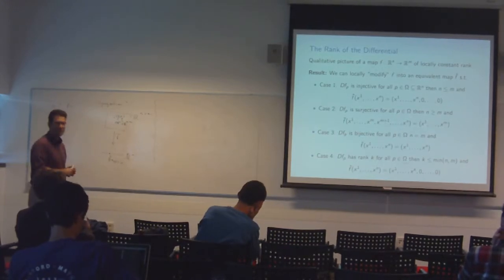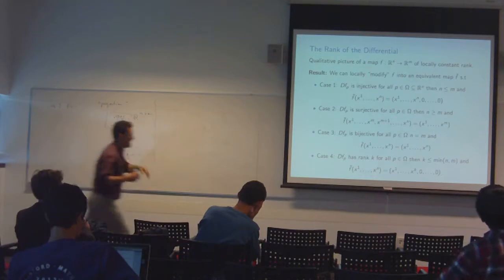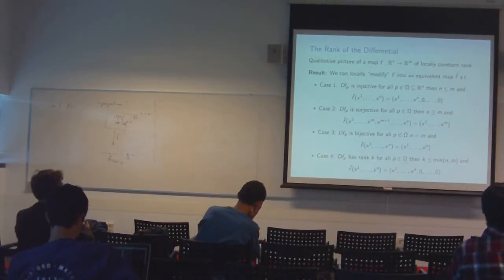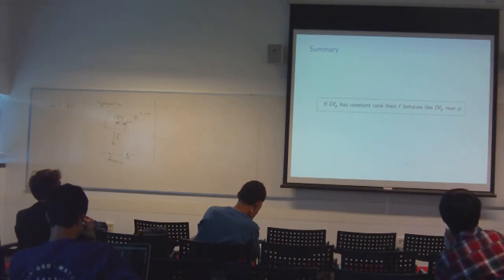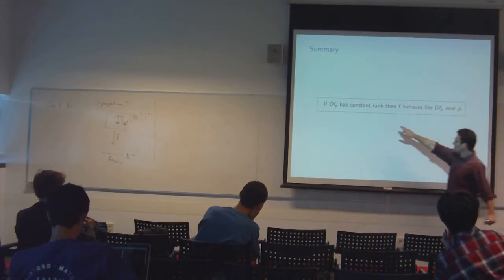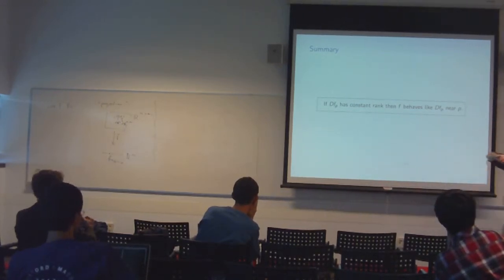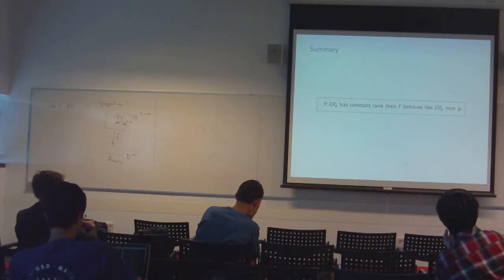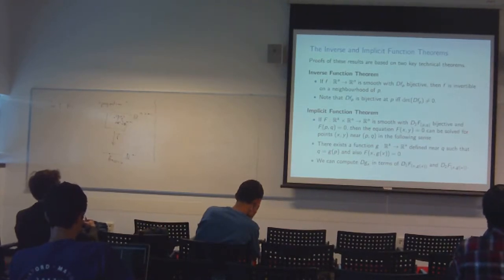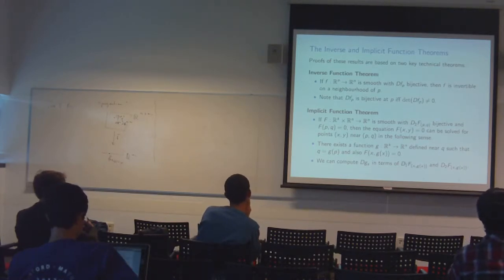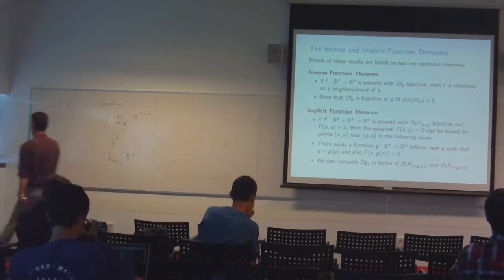The take-home message: if DF(P) has constant rank, then F behaves like DF(P) near P. This applies whether F is injective, surjective, bijective, or has lower rank. The proof of this fact follows from two key technical theorems of differential geometry — the inverse function theorem and the implicit function theorem — which you should know by name.